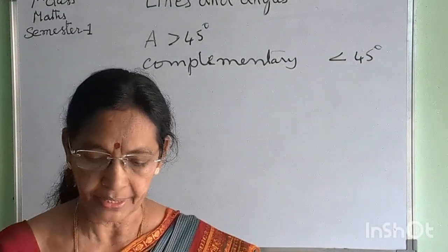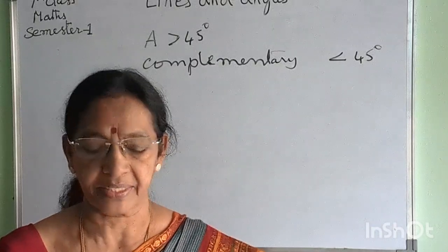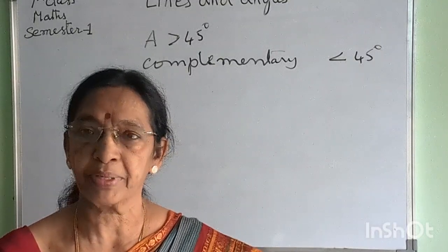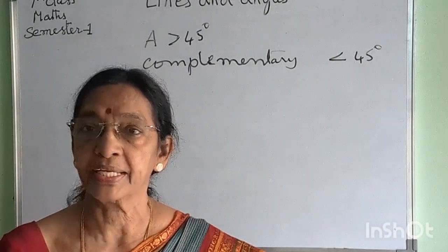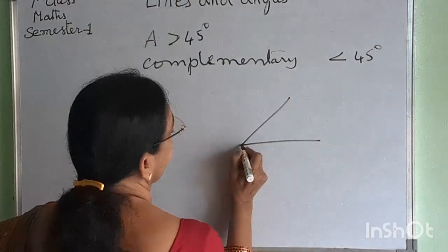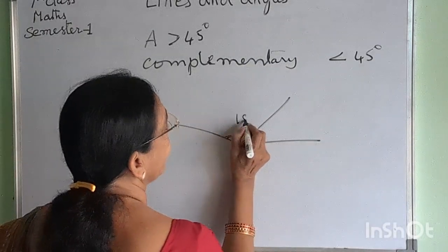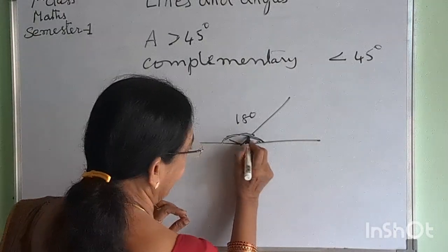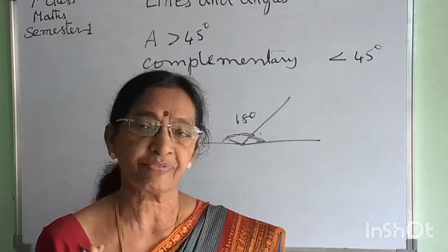If two angles are complementary, the sum of their measures is 90 degrees. If two angles are supplementary, the sum of their measures is 180 degrees. If two adjacent angles are supplementary, their sum is 180 degrees. If they form a straight line, only then the sum is 180 degrees. So if two adjacent angles are supplementary, then they form a linear pair.